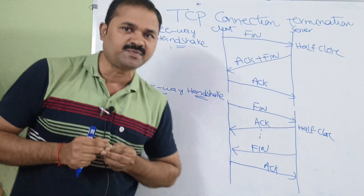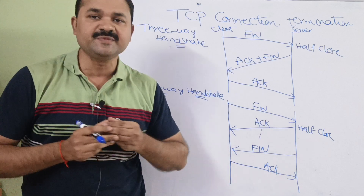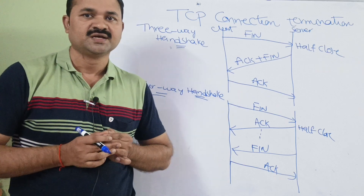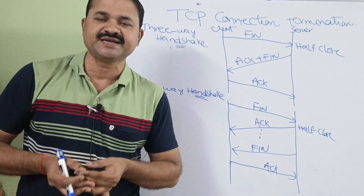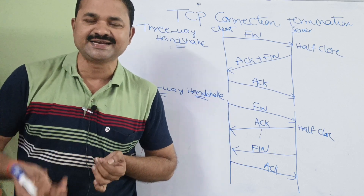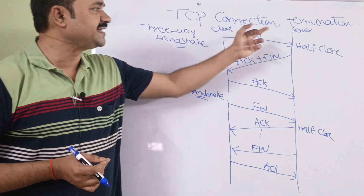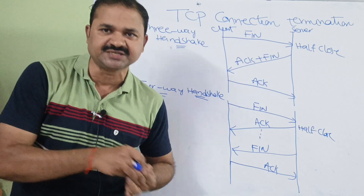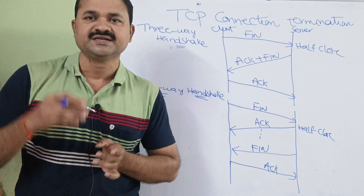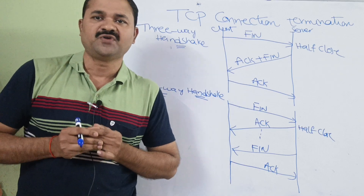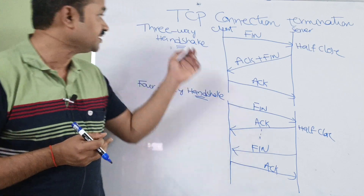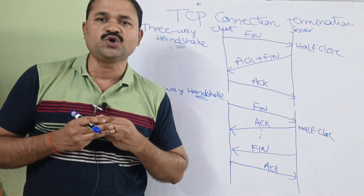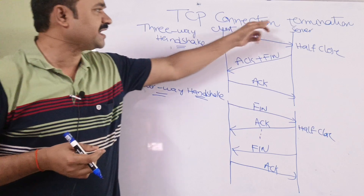Let us discuss TCP connection termination. TCP connection mainly involves three phases: the first is TCP connection establishment, the second is data transfer, and the third is TCP connection termination. First, a connection is established between the client and the server, after that data is transferred, and once the transferring of data is over, we need to terminate the connection.